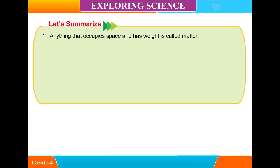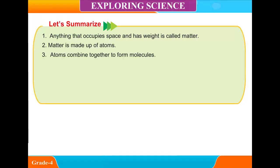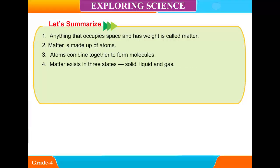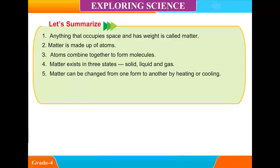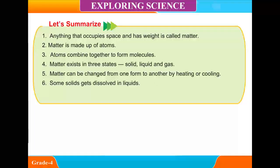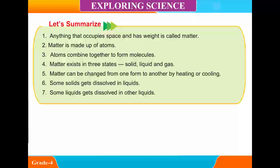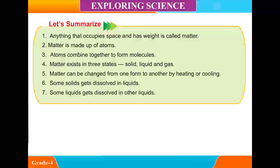Let's summarize. 1. Anything that occupies space and has weight is called matter. 2. Matter is made up of atoms. 3. Atoms combine together to form molecules. 4. Matter exists in three states: solid, liquid and gas. 5. Matter can be changed from one form to another by heating or cooling. 6. Some solids get dissolved in liquids. 7. Some liquids get dissolved in other liquids.